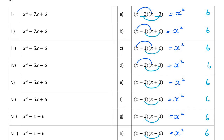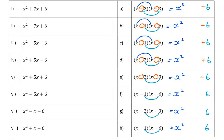Now let's look at the signs of the 6. Positive times negative gives negative 6; negative 1 times positive 6 gives negative 6; positive 1 times positive 6 gives positive. If the signs are the same — positive times positive — you get positive. If the signs are different — negative times positive — you get negative. Negative times negative gives positive. So same signs give positive, different signs give negative.